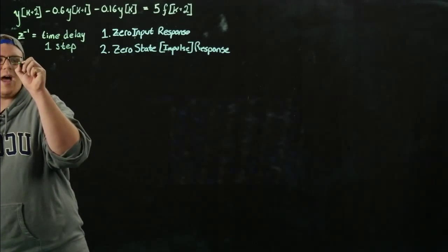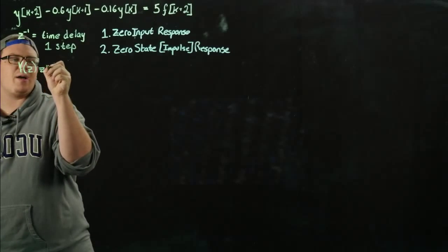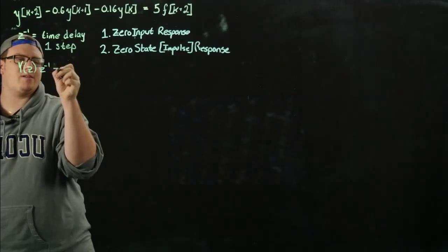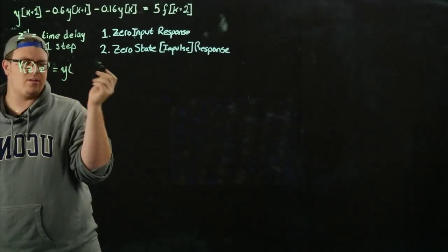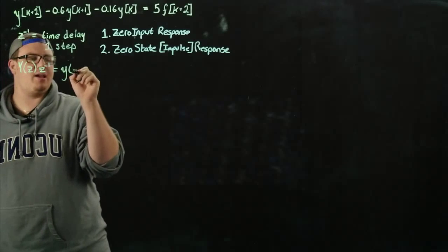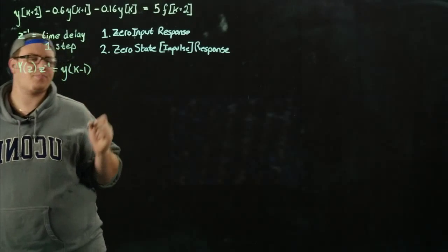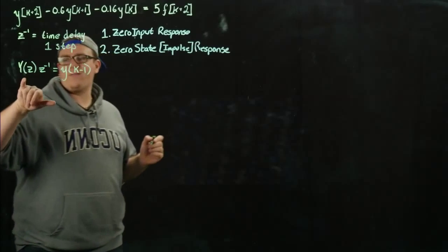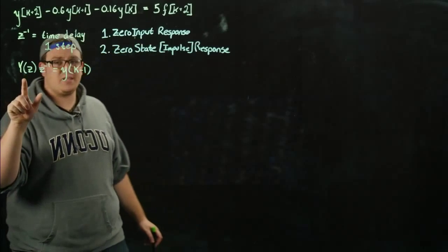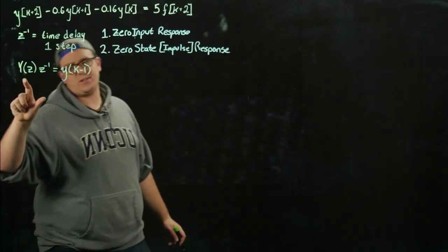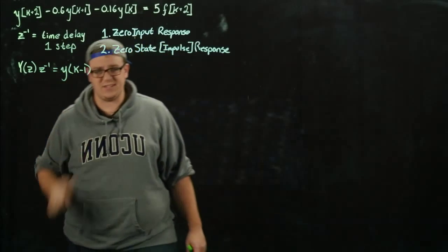So if you have an output y of z and you multiply it by z-inverse, you get in the discrete time plane y of k minus 1. So not y of k, which you would normally get if you just took the inverse z-transform of y of z — you actually have to shift it back one because of the z-inverse operator.